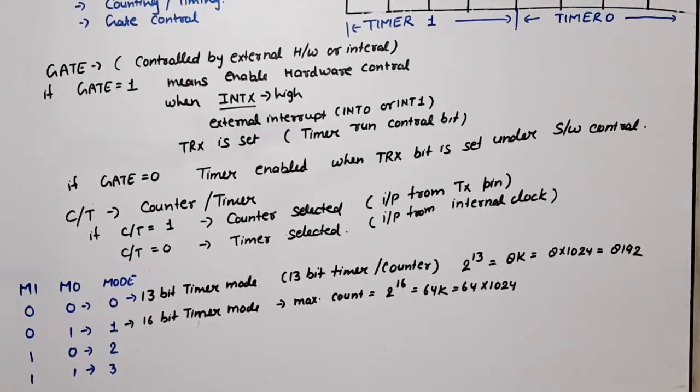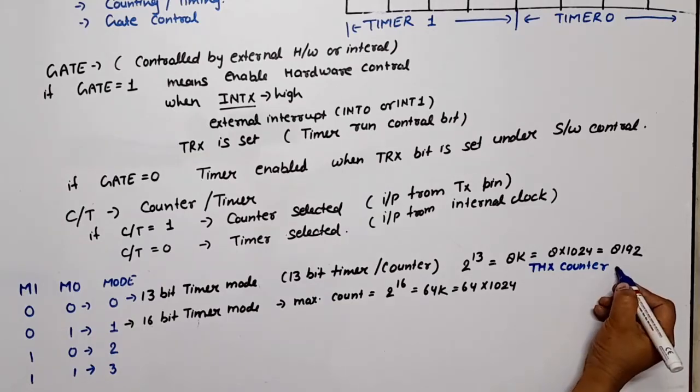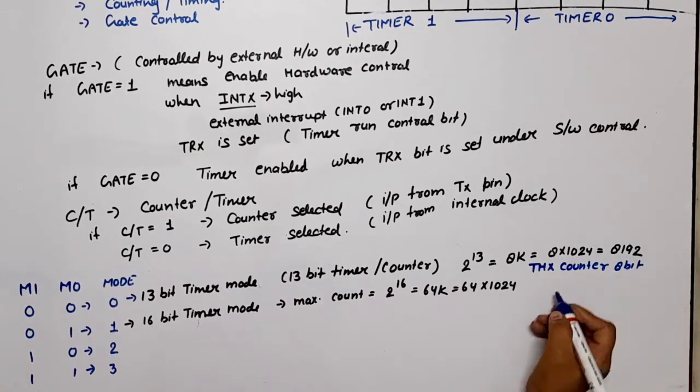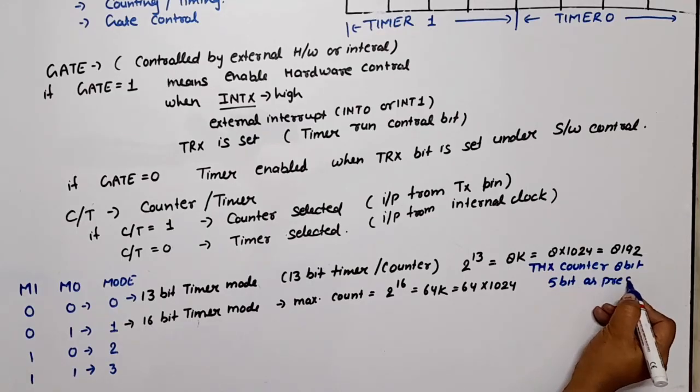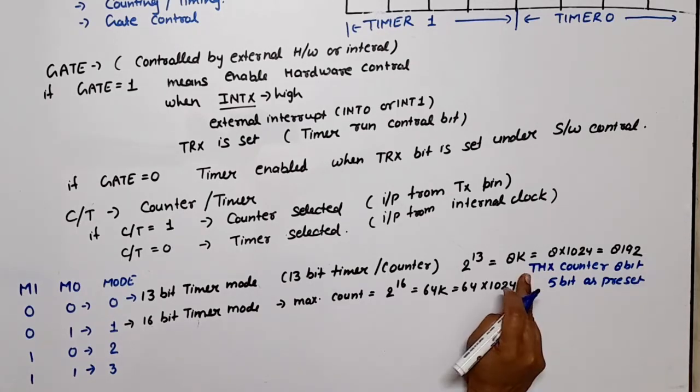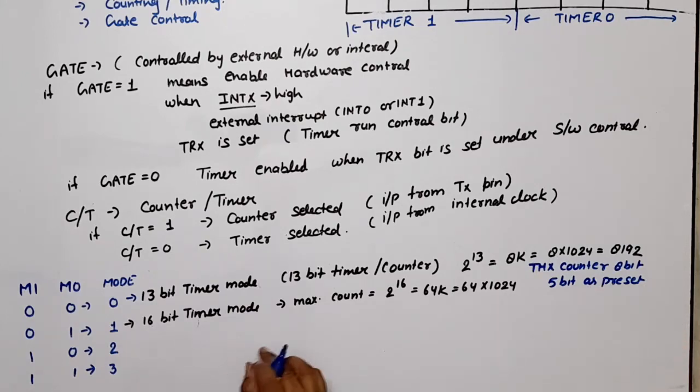One more thing which is important: in case of 13-bit timer, the starting 8 bits are used as THX counter, and the remaining 5 bits as preset. So 8 bits in THX as a counter and 5 bits as preset.